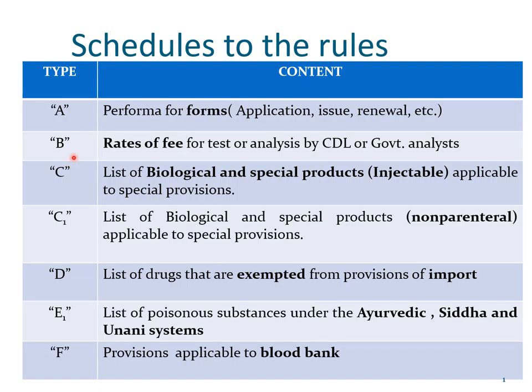Schedule B lists the rate of fees that are charged for test or analysis carried out by the Central Drug Laboratory or by the government analyst. Schedule C is very important to us because many times I have discussed 'other than C, C1 and X.' Schedule C contains a list of biological and special products — that is injectables — which need special provisions. Schedule C1 is a list of biological and special products but non-parenterals, and the special provisions applicable to them.